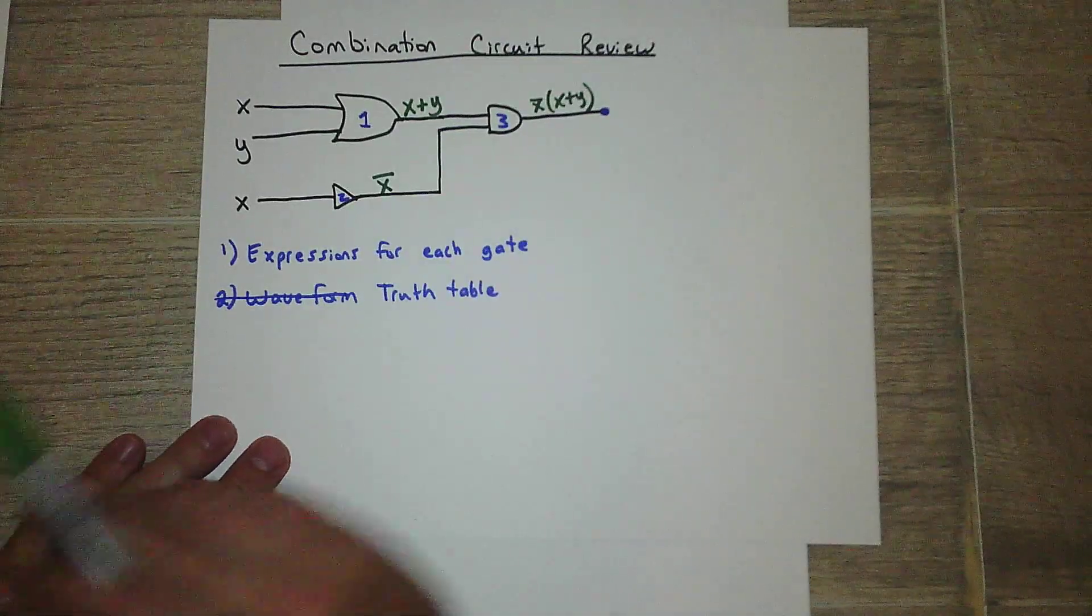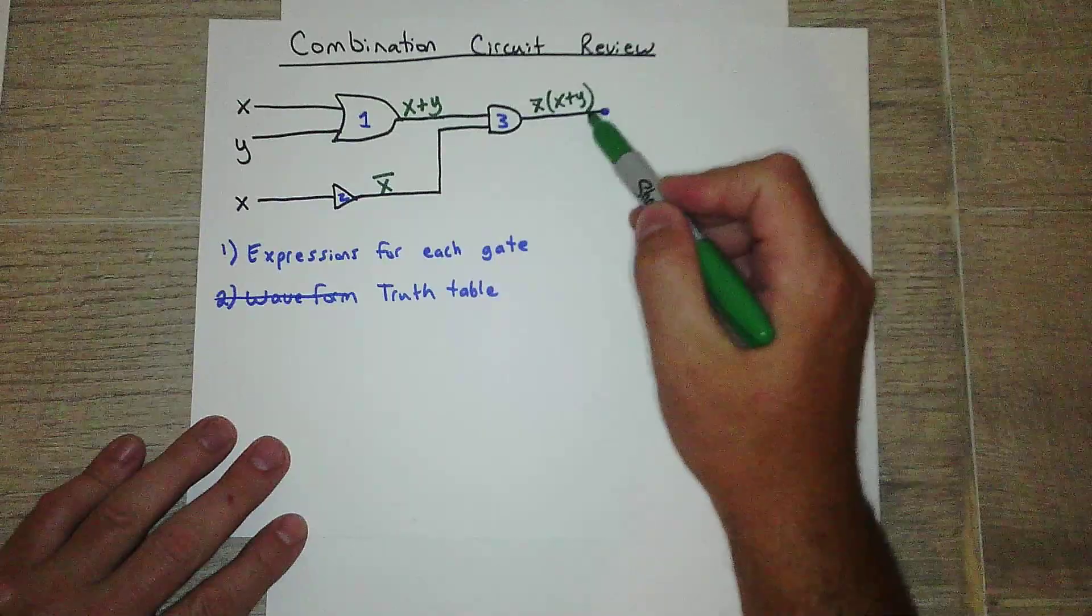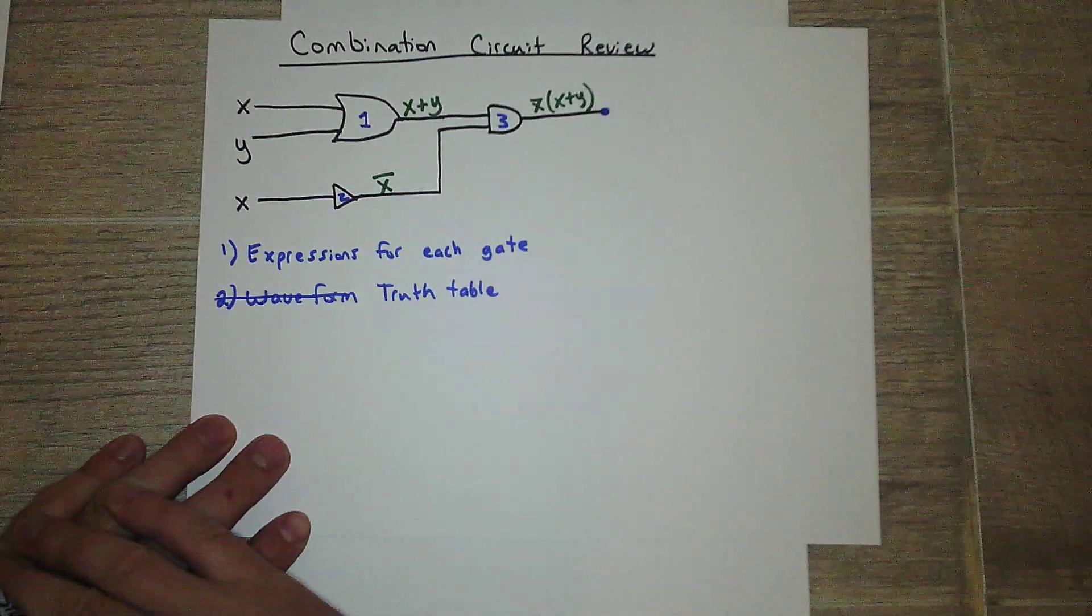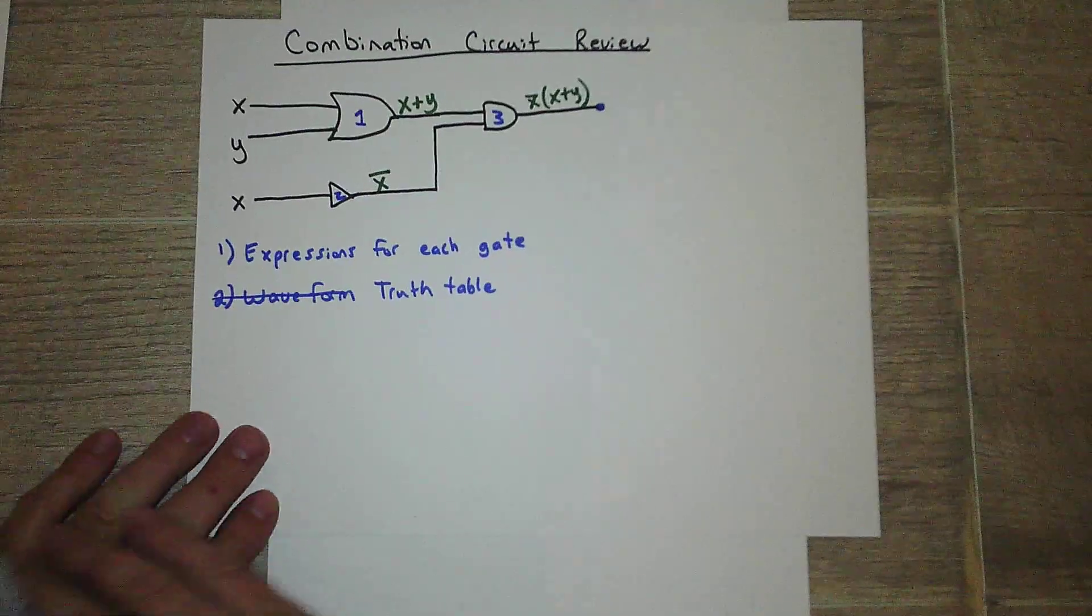Just like in algebra how parentheses mean multiplication, so same thing here. Okay, so that's your expression for each gate. So truth table.